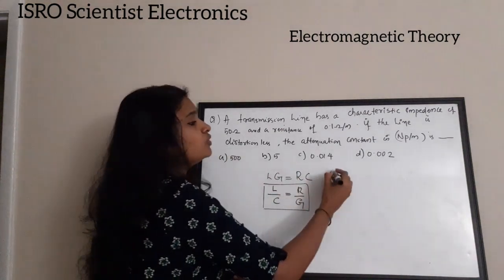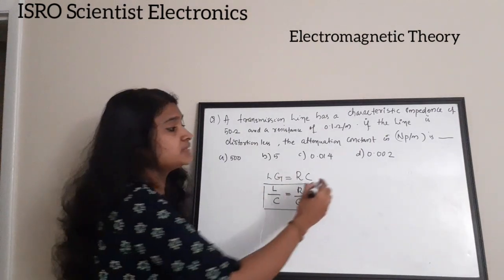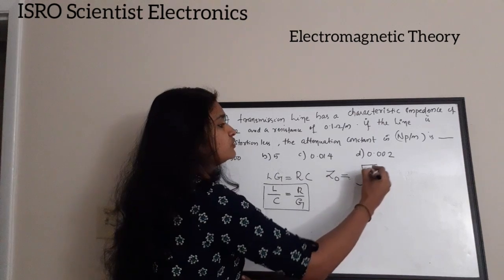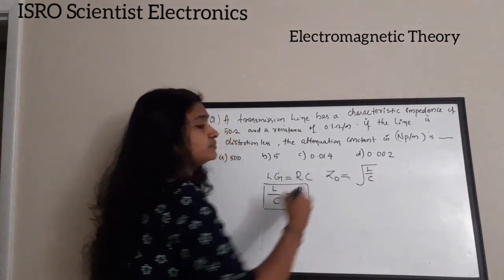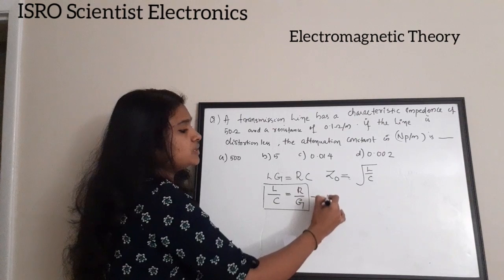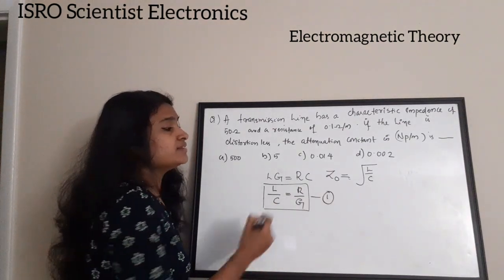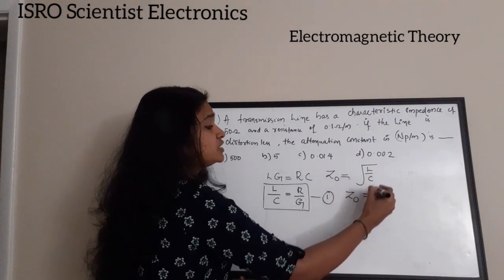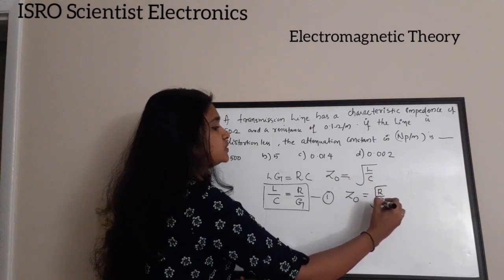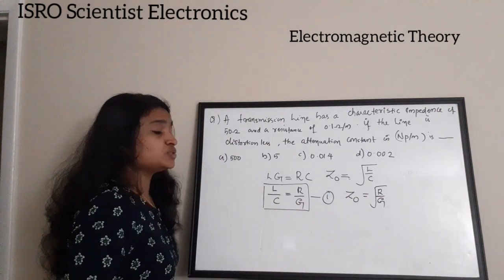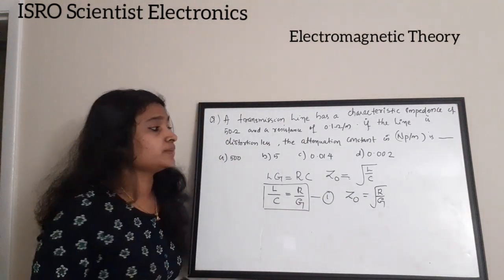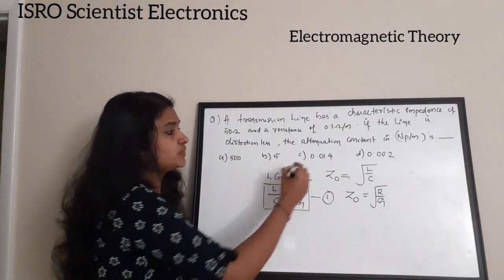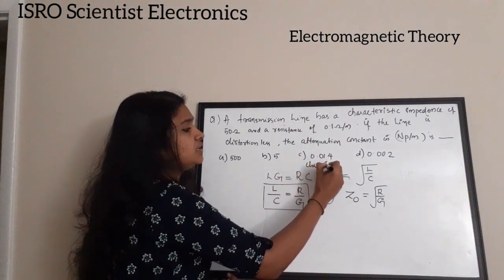For a transmission line, the characteristic impedance is given by Z₀ = √(L/C). From the distortionless condition, we can write Z₀ = √(L/C) = √(R/G), since L/C = R/G for a distortionless transmission line.